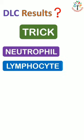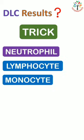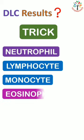In the results, first we are going to write neutrophil, second lymphocyte, third monocyte, fourth eosinophil, fifth basophil.